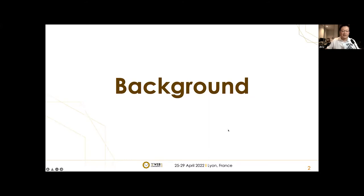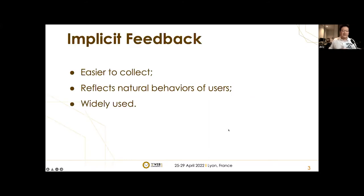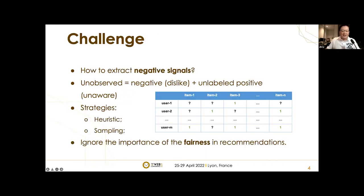Let's look at the background first. There is an increasing number of state-of-the-art works developed based on implicit feedback data, since it's easier to collect and can reflect the natural behaviors of users very well, such as purchases and clicks on products. However, since implicit feedback only contains positive feedback, there is a challenge in how to extract negative signals from unobserved interactions, which are a mixture of negative interactions and unlabeled positive interactions.